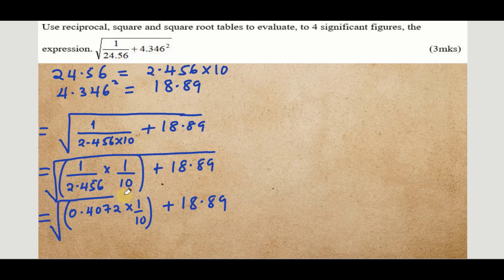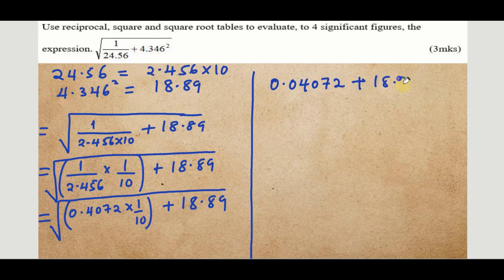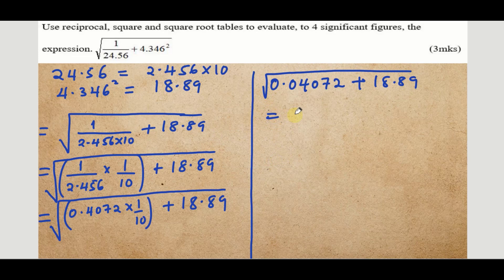Don't forget everything is under the square root sign. From here, when you work out this you'll get 0.04072 addition 18.89. Get the square root of this. When you add this you'll get 18.93072.